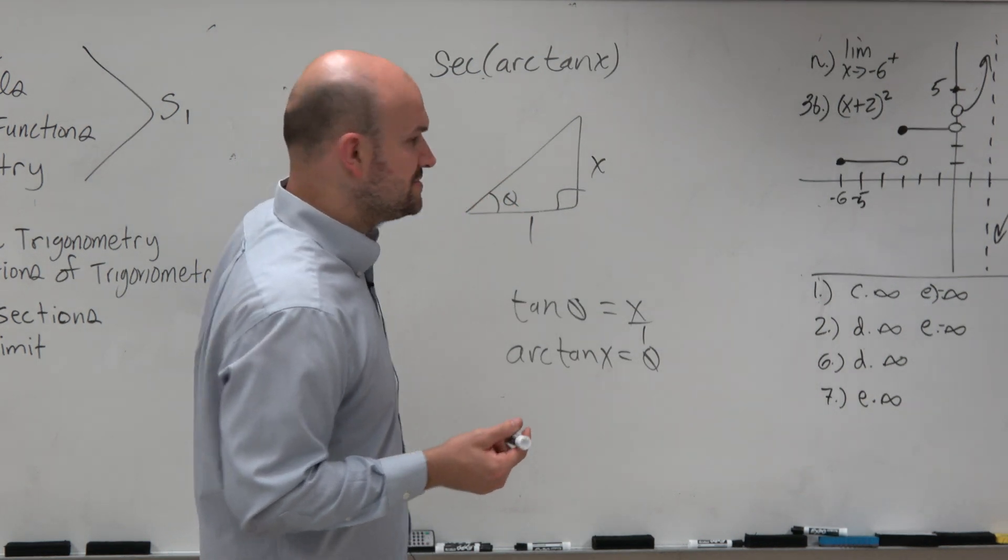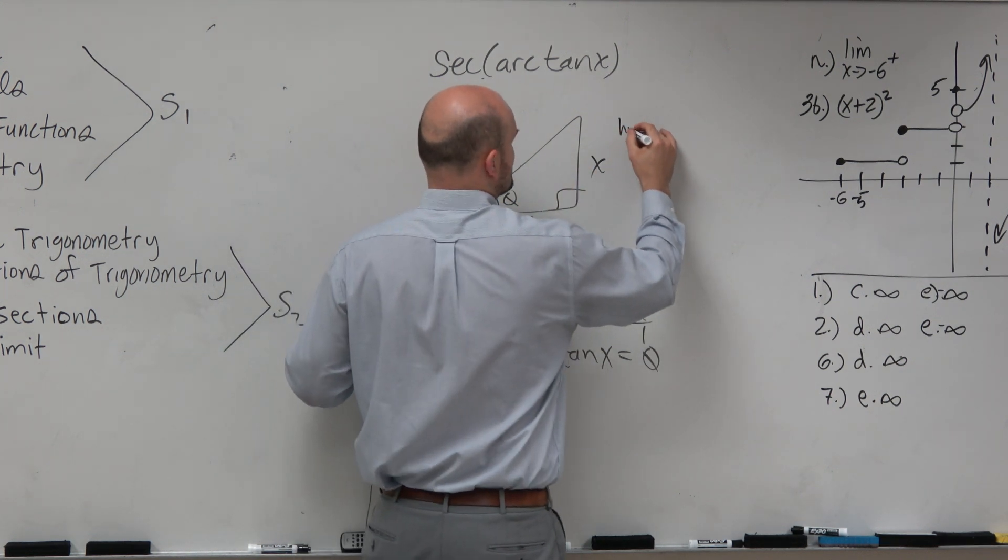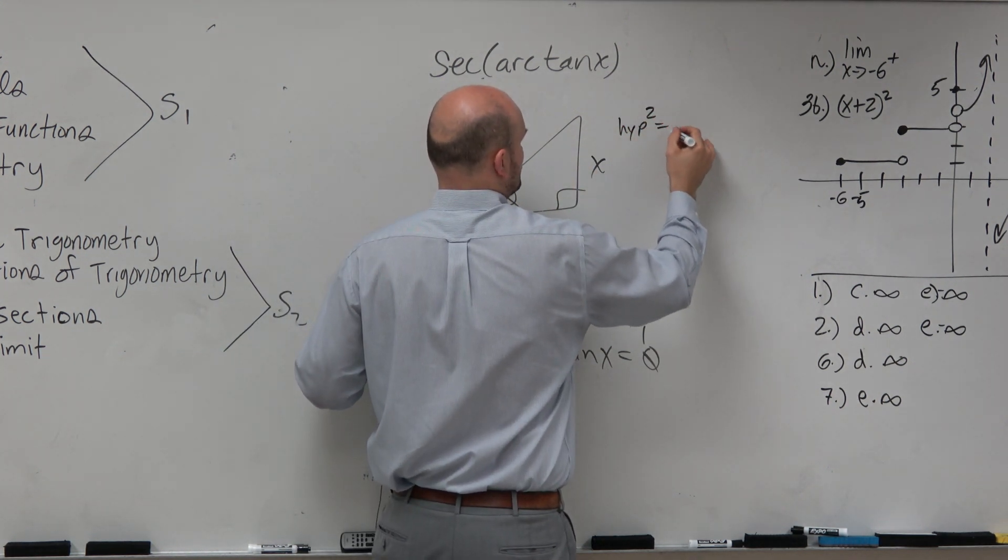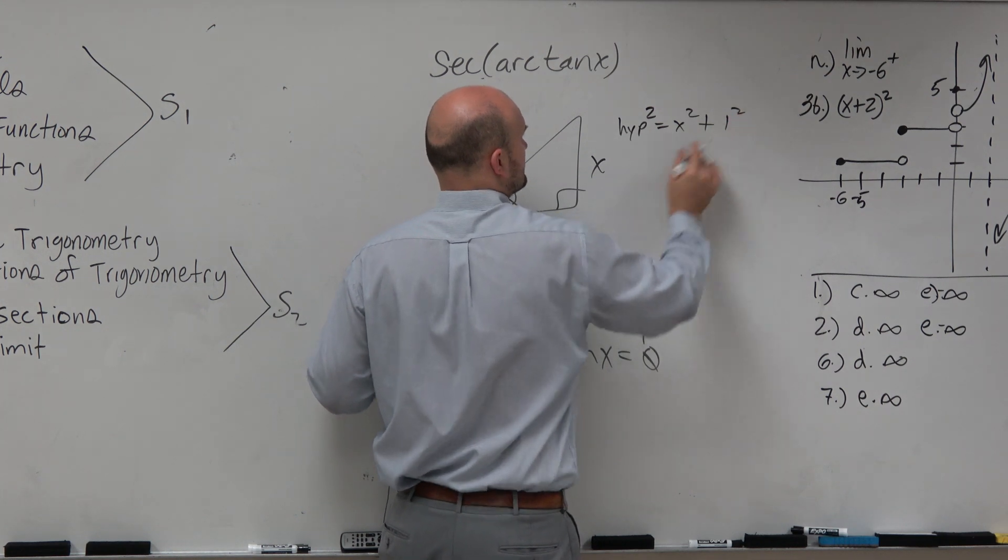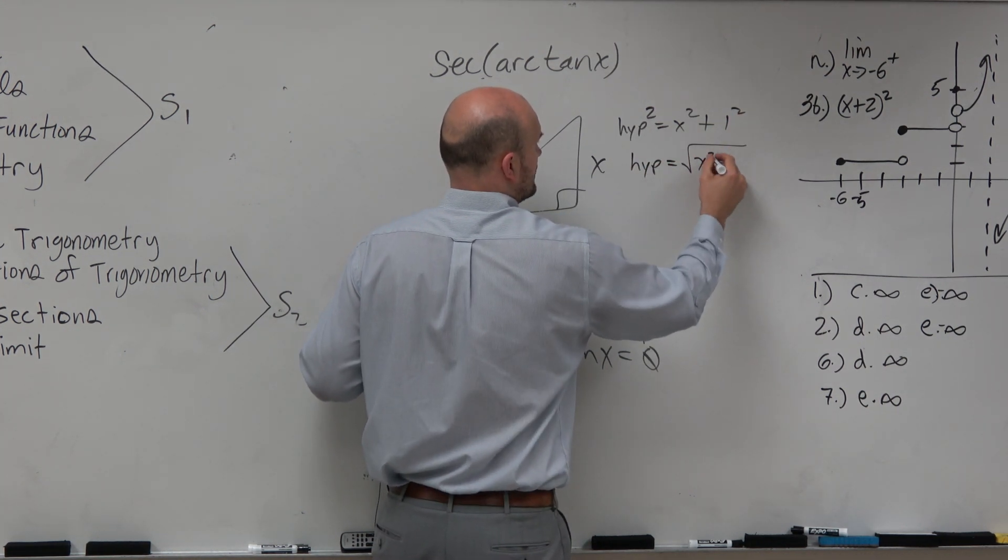and now do we have enough information to find the hypotenuse? So the hypotenuse squared is equal to x squared plus 1 squared. So therefore, the hypotenuse is equal to the square root of x squared plus 1.